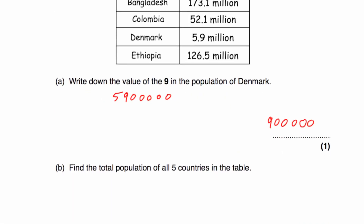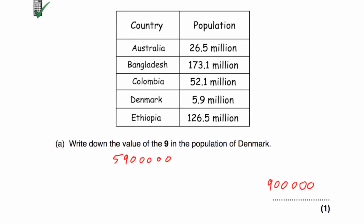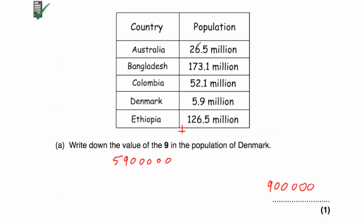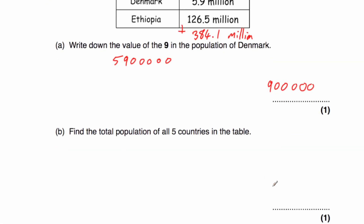Part B says find the total population of the five countries in the table. I'm going to keep them as millions: 26.5 plus 173.1 plus 52.1 plus 5.9 plus 126.5. When I add those up, I get 384.1 million. So that is our answer — 384.1 million. Writing it in figures: 384,100,000.